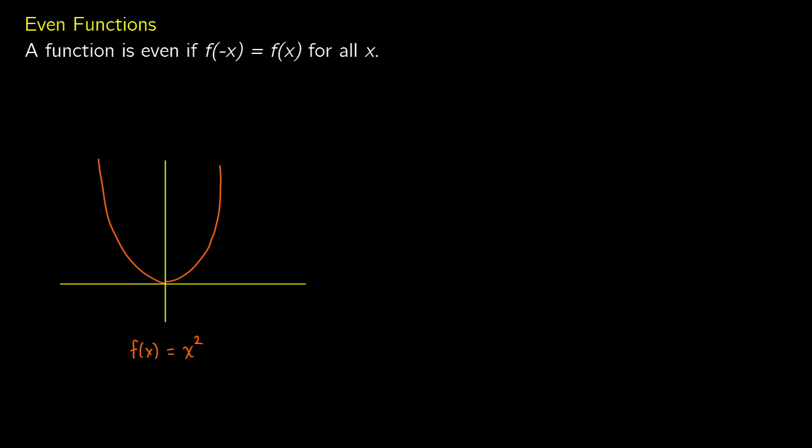We're going to cover even and odd functions. A function is even if f of negative x equals f of x for all x. In other words, there's a reflection across the y-axis — everything to the left of zero looks the same as everything to the right of zero.